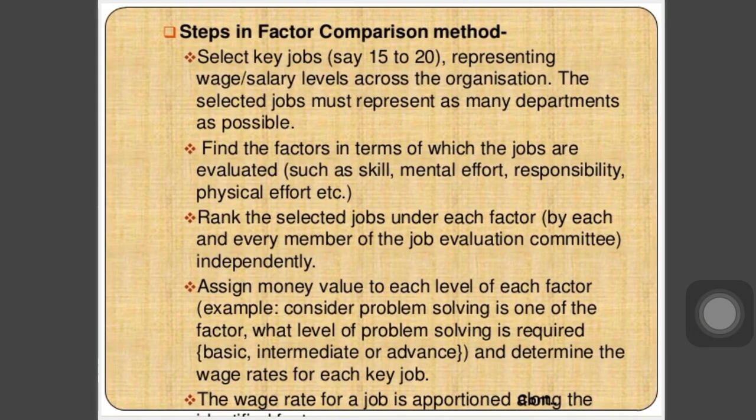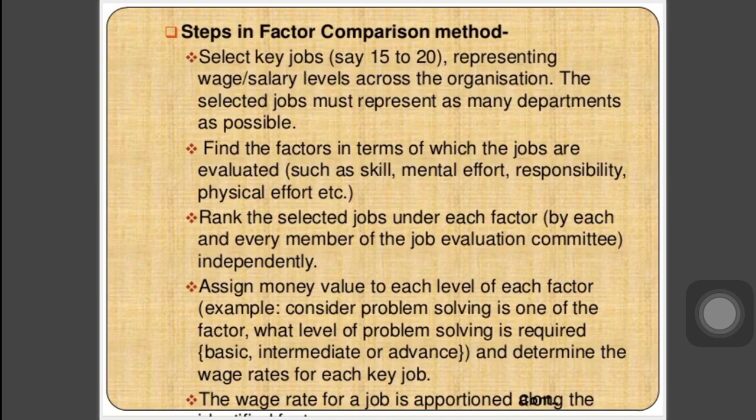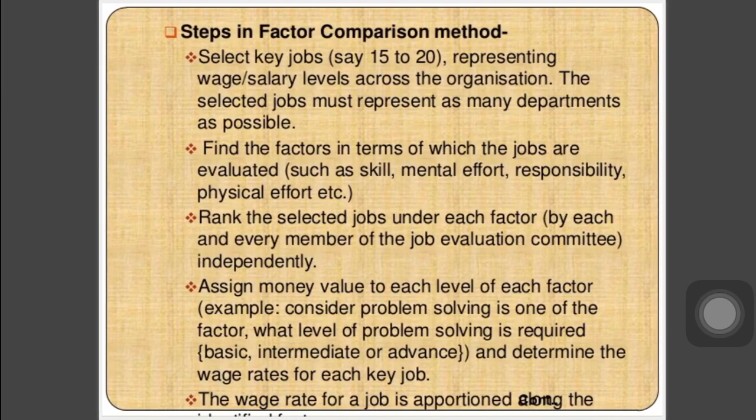The steps in the factor comparison method are: first, select key jobs representing 15 to 20 salary grades available across the organization, ensuring selected jobs represent as many departments as possible. Then find all factors by which jobs are evaluated — such as skill, mental effort, responsibilities, physical effort, etc. Rank the selected jobs under each factor. Then assign a money value to each level of each factor and determine the wage rate for each key job.